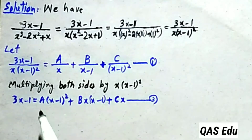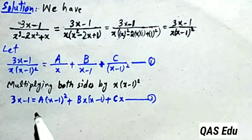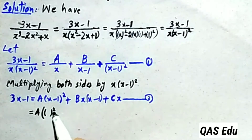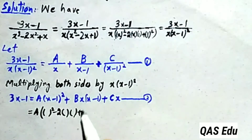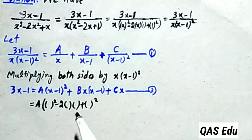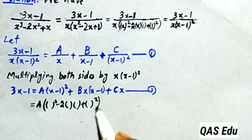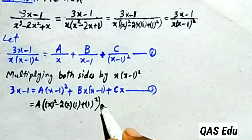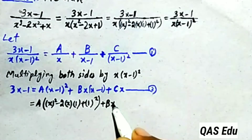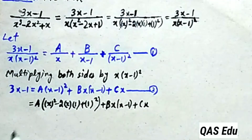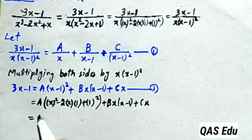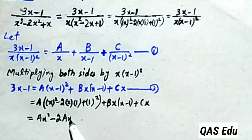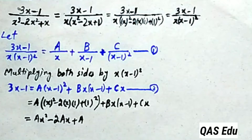For B, we cannot find it directly by simple substitution. We need to use a separate equation. So we will simplify equation number 2 further. Expanding A(x-1)² using the formula (a-b)² = a² - 2ab + b², with a = x and b = 1, we get ax² - 2ax + a.